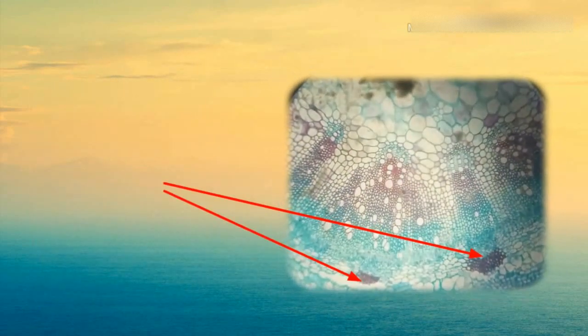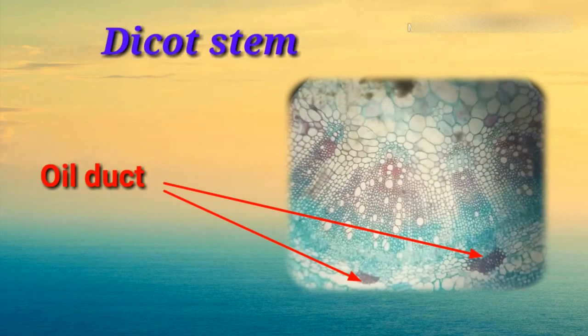Here is the oil duct, and this one is dicot stem. Remember, if there is an oil duct, most probably it is dicot stem.